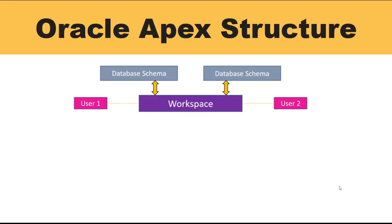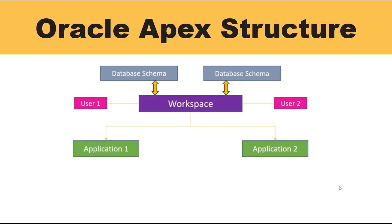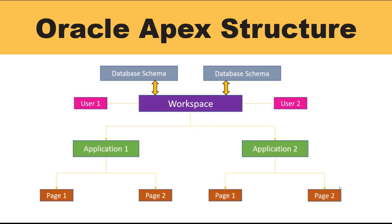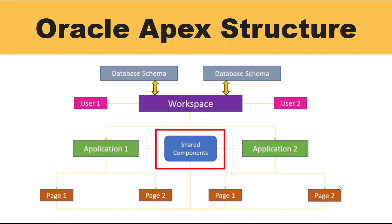Coming to the design part, a workspace can be divided into applications, and each application can be divided into various pages that can be represented as a web page. All these things are interlinked to one component called shared components. The shared components include security, plugins, themes, templates, and various lists of values that can be added as common features.